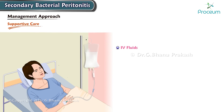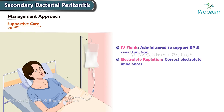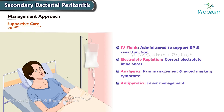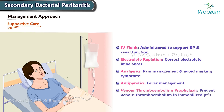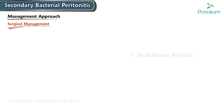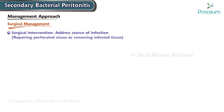Supportive care includes intravenous fluids administered to support blood pressure and renal function, electrolyte repletion to correct any imbalances, analgesics carefully selected for pain management to avoid masking symptoms, antipyretics for fever management, and venous thromboembolism prophylaxis to prevent venous thromboembolism in immobilized patients. Surgical intervention is often required to directly address the source of infection, such as repairing a perforated viscus or removing infected tissue, with the approach depending on the underlying cause and the patient's condition.